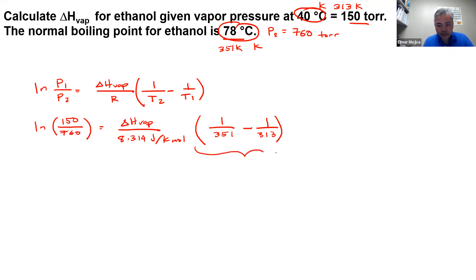Now, this value will give you a negative value because this is smaller compared to this one, and that is around 3.459 times 10 to the negative 4, and you multiply it with heat of vaporization over 8.314 value. And this one, if you're going to do this, 150 over 760, that will give you, get the ln, that's negative 1.623.